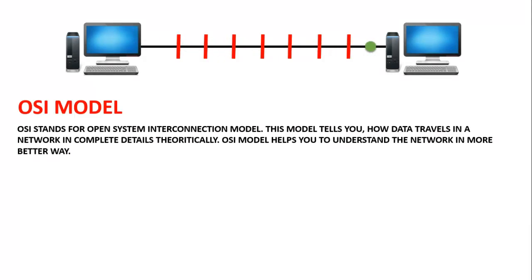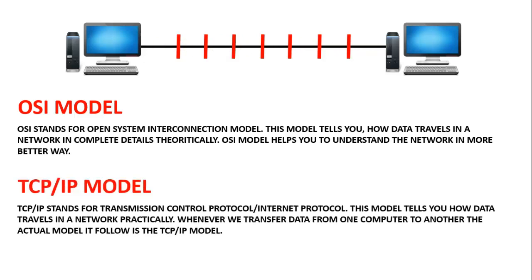The actual model that devices follow in a network is the TCP/IP model. TCP/IP stands for Transmission Control Protocol, Internet Protocol. This model tells you how data travels in a network practically. In practical scenarios, how data travels in a network is well explained by the TCP/IP model. Whenever we transfer data from one computer to another, the actual model it follows is the TCP/IP model.